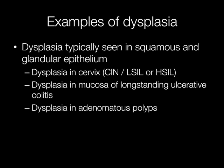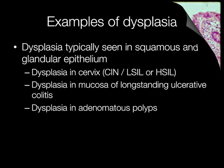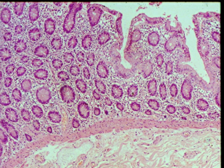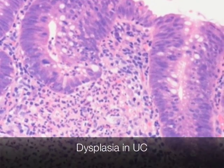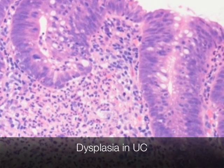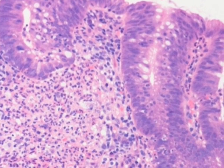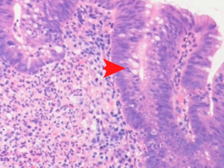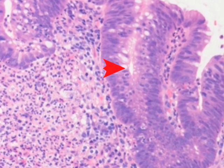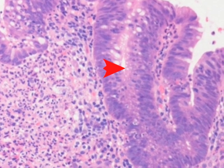Dysplasia may develop in the mucosa of patients with long-standing ulcerative colitis, and dysplasia is always seen in adenomatous polyps. This is a biopsy of normal colonic mucosa with regularly spaced normal gland crypts with small regular nuclei. This biopsy from a patient with ulcerative colitis shows nuclei in the gland crypts that are haphazardly arranged, varied in size and shape, and undergoing a lot of mitotic activity — i.e. they are dividing. This is an example of dysplasia.